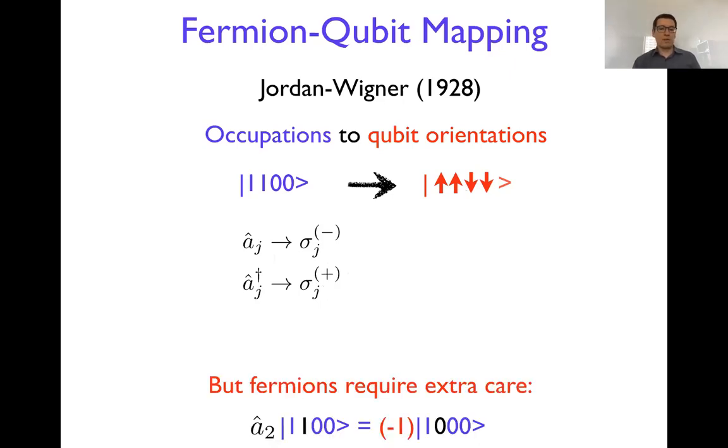If you want to create a particle, that means you need to flip the qubit from the down state to the up state, which can perfectly be done with the sigma plus operator. Now the only problem with this simple intuition is that the fermions require some extra care, and that's the sign thing that we saw when we talked about creation and annihilation operators.